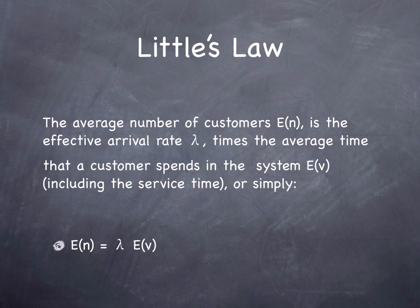In queuing theory, Little's Law is a theorem by John Little which states the long-term average number of customers in a stable system, E(n), is equal to the long-term average effective arrival rate, lambda, multiplied by the average time a customer spends in the system, E(v), expressed algebraically, E(n) equals lambda times E(v).